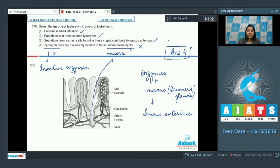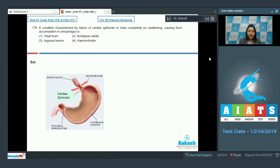Let us see the next question students. Question number 179. A condition characterized by failure of cardiac sphincter to relax completely on swallowing causing food accumulation in esophagus is. Over here, we have four conditions: heartburn, achalasia cardia, inguinal hernia and hemorrhoids. Let us see them one by one.